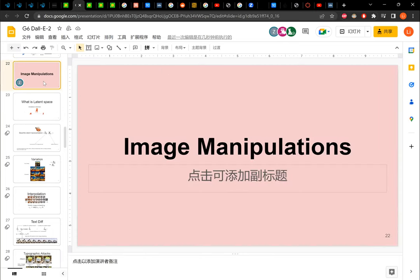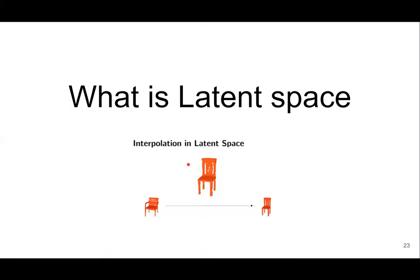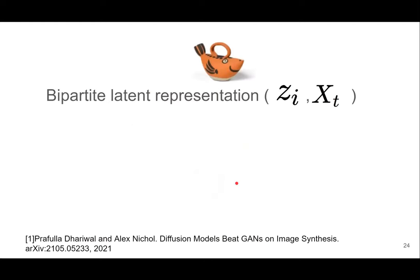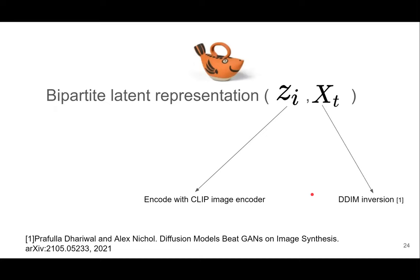I'm going to talk about image manipulation. First, we need to understand what the latent space is. The latent space is the information of images compressed into a vector space represented by numbers. If we modify the latent space value, we can slightly change one image into another. The image representation uses two parameters: ZI, which is the CLIP image encoding, and XT, which is the DDIM inversion — the information stored to generate the final result.